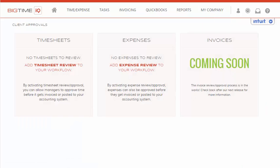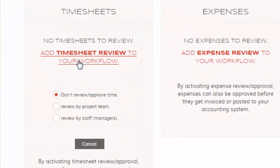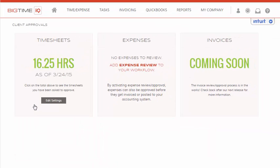On the Approval page, we see that we do not have Workflow Reviews set up. In order to set that up, we will select the link to add Timesheet Review to your Workflow, and then choose how we want to review. We can either choose by Project Team, which is based on the teams you have set up in your projects where the team lead acts as the reviewer, or we can set it up by Review by Staff Managers, which is based on the departments you can set up in BigTime. For today, we'll choose Review by Staff Managers.